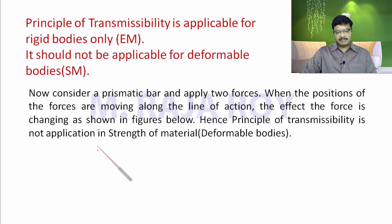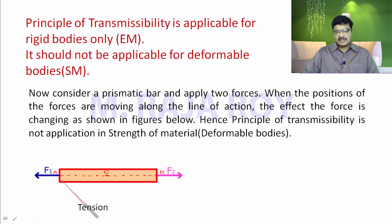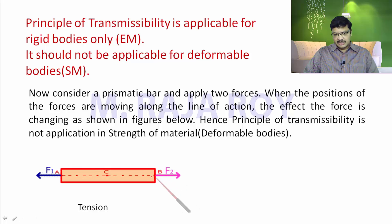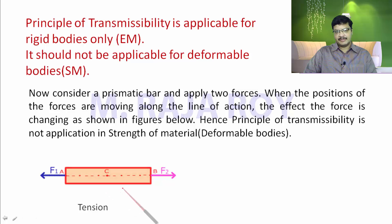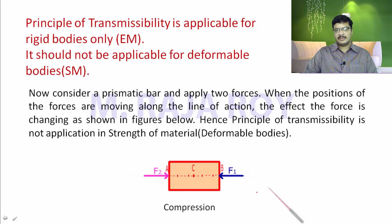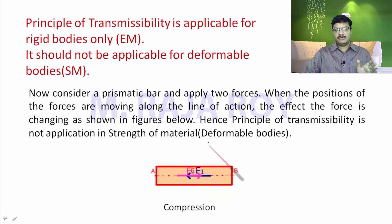If you take a prismatic bar and apply two forces F1 and F2 at points A and B, the bar will elongate — the length increases and the cross-sectional area decreases. Now if I change the positions of F1 and F2 along their line of action — placing F1 at point B and F2 at point A — and observe what happens: the bar changes from tension to compression. Now the length decreases and the cross-section increases. The entire scenario changes when you consider a deformable body.